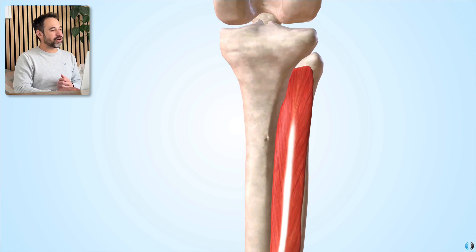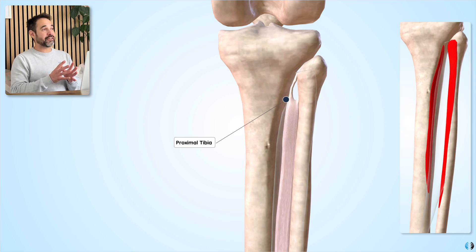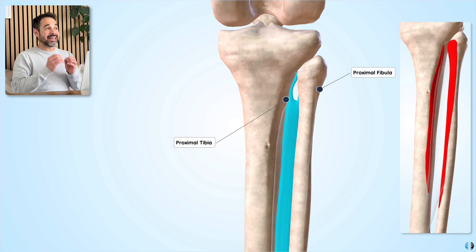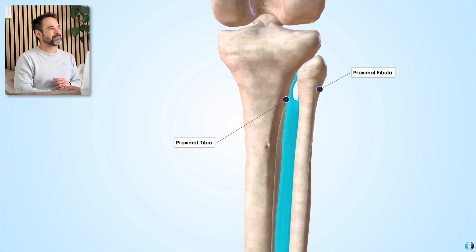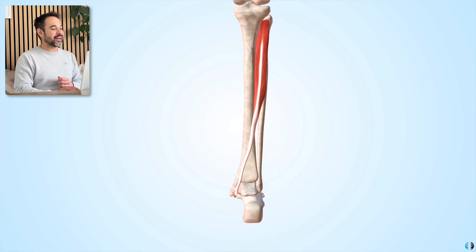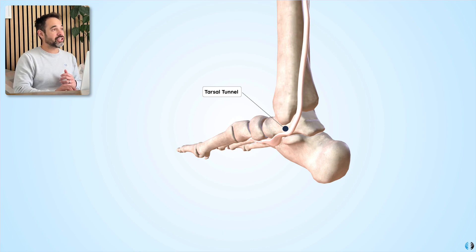Let's head into the origin. If we fade out this muscle, we can see that it originates from the posterior surface of the proximal tibia, as well as the posterior surface of the proximal fibula, and the interosseous membrane, which is between the tibia and the fibula. The tibialis posterior muscle runs down the posterior tibia and swoops down towards the medial ankle.